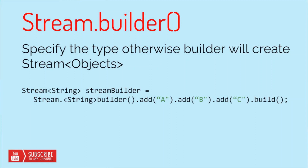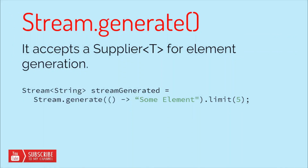The first function we are going to see is Stream.builder. Stream.builder is used to build a stream by adding elements to the stream on the go. In this example, we have a Stream of String and we use Stream.builder with the dot add method, adding A, B, and C — three components. Once we are done, we use dot build, which results in a Stream of String.